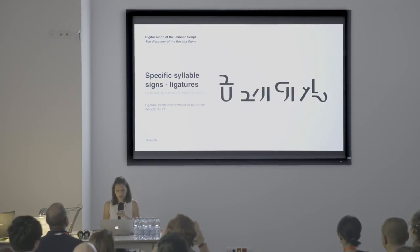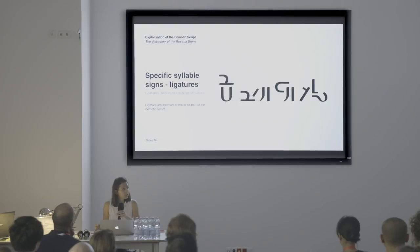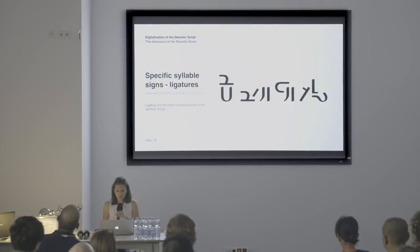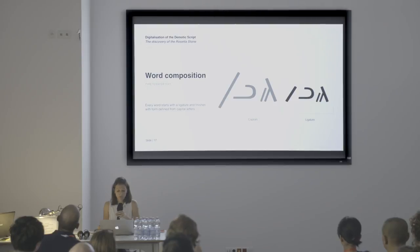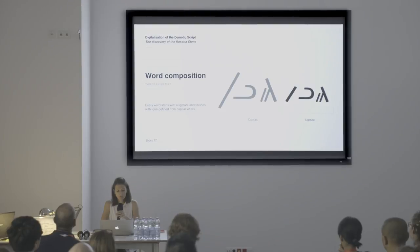Ligatures are the most complex part of the demotic script. Every ligature is composed only from syllables of the small lowercase letters. The most important rule for writing the ligatures is that they can be written not only next to each other as we use today, but also one above the other. In most cases there are two or more signs in these ligatures. Because there is no punctuation marks or space dividing between letters and words, every word begins with a ligature and finishes with capital letters.